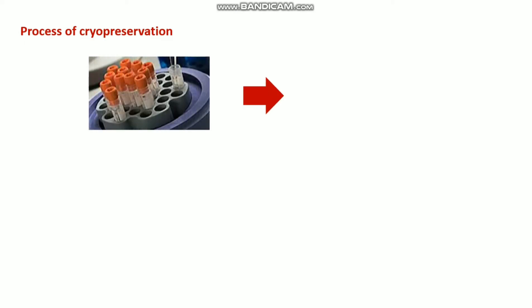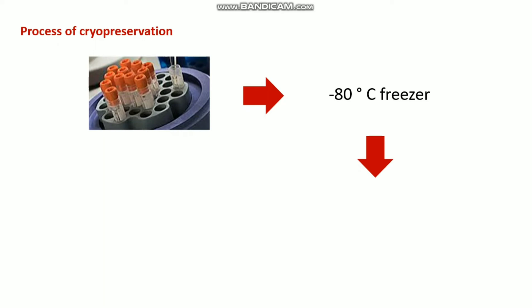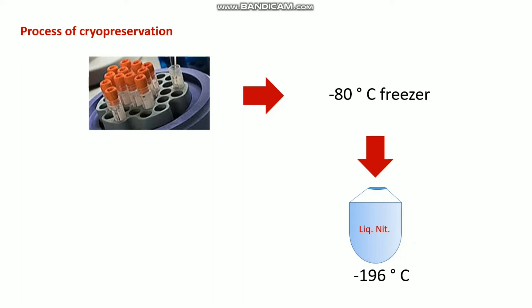Next is the process of cryopreservation, which involves step-by-step procedures. Cells need to be stored in cryo vials and then placed in this kind of container, then put in the minus 80 degree centigrade freezer — but not directly into liquid nitrogen. After a couple of days at minus 80 degrees, you transfer those cells into liquid nitrogen, which is around minus 196 degrees centigrade. You should not directly store your cells into liquid nitrogen as that harms cells and causes cell death.